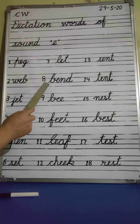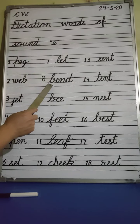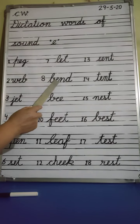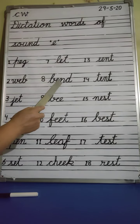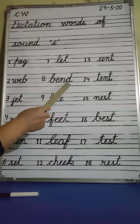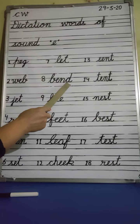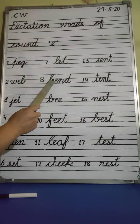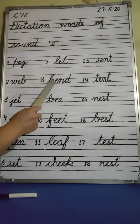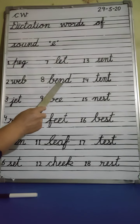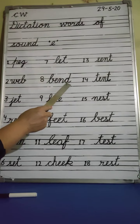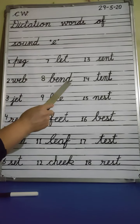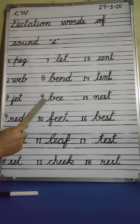Number 8. B, E, N, D — Bend. B, E, N, D — Bend. Okay, next.